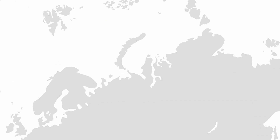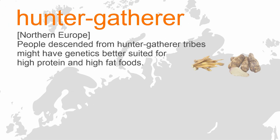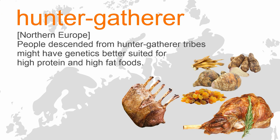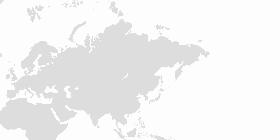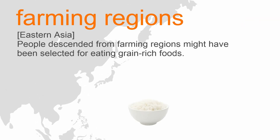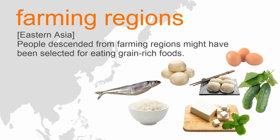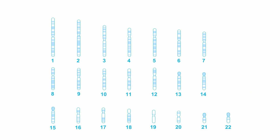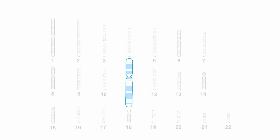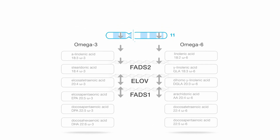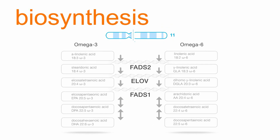For example, people descended from hunter-gatherer tribes might have genetics better suited for high-protein and high-fat foods, while people descended from farming regions might have been selected for eating grain-rich foods. One good example to illustrate gene-food interaction is the presence of genetic polymorphism in a locus of chromosome 11, which encodes the FADS1 gene. The FADS1 gene controls the biosynthesis of very long-chain polyunsaturated fatty acids, such as omega-3 EPA and omega-6 AA.